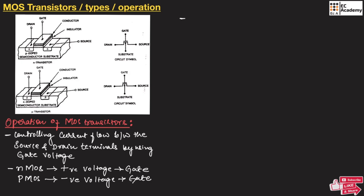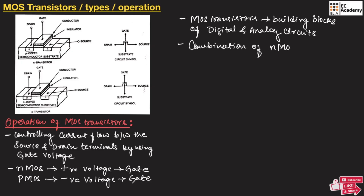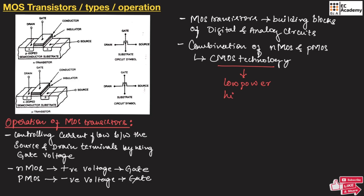MOS transistors are the building blocks of digital and analog circuits. The combination of NMOS and PMOS transistors is known as CMOS technology. This CMOS technology enables low-power, high-speed circuits used in microprocessors, memory chips, and various other electronic devices.